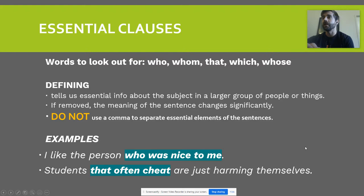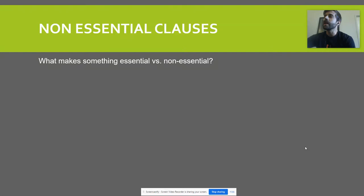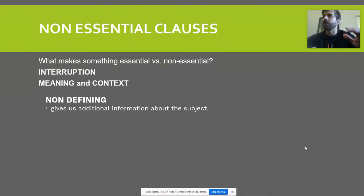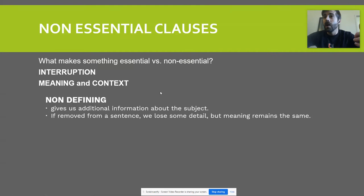Now let's look at non-essential clauses. The ultimate question of this video is: what makes something essential versus non-essential? It boils down to two things. One, is this phrase or clause interrupting my idea? Or two, is it just providing extra additional information that would be nice to know? If it's just nice-to-know information, it's non-essential. If it's essential information, don't put commas around it. These are also sometimes called non-defining terms. The way I like to think about it: this phrase is not defining what I'm talking about. It's extra stuff — additional information about the subject. And if we take it out, we might lose some details, but the meaning remains the same.